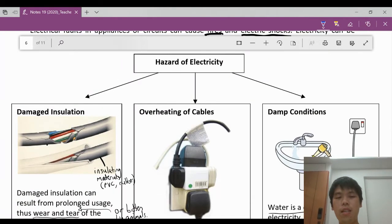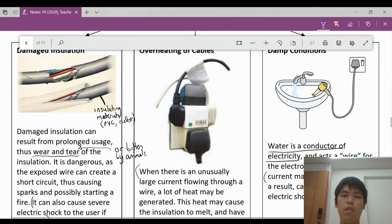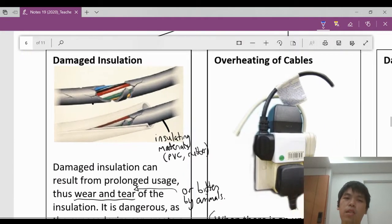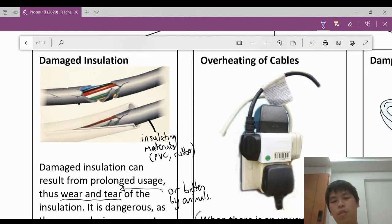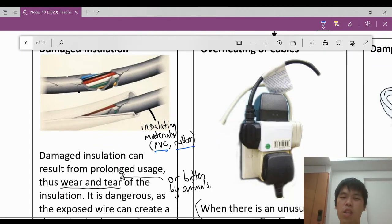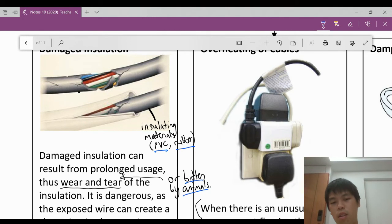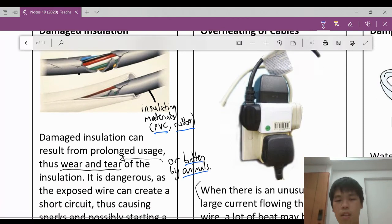So the first hazard is damaged insulation. Usually insulations are made of insulating materials, either as PVC or as rubber. These materials can get damaged over long usage, long time due to wear and tear. At the same time, it can also be bitten by animals.